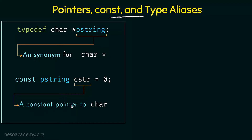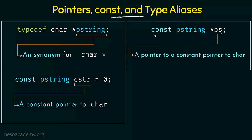It is very important to emphasize this: cstr itself is a constant pointer, and it is pointing to a character. Next we have: const pstring* ps. The asterisk here signifies that ps itself is a pointer. What is it pointing to? It is pointing to a constant pointer, and that constant pointer also points to a character.